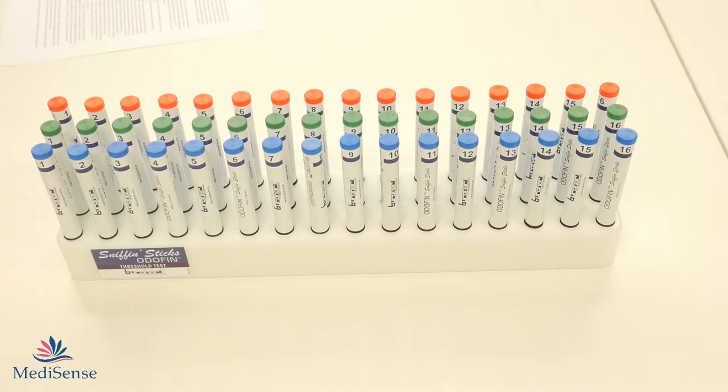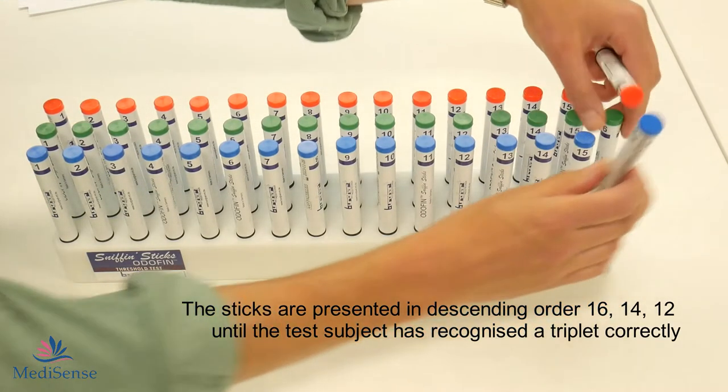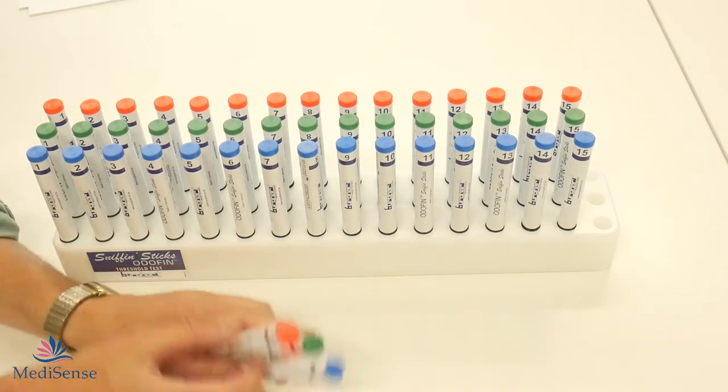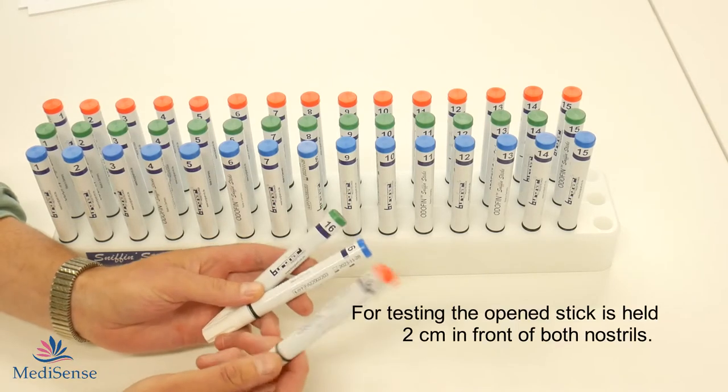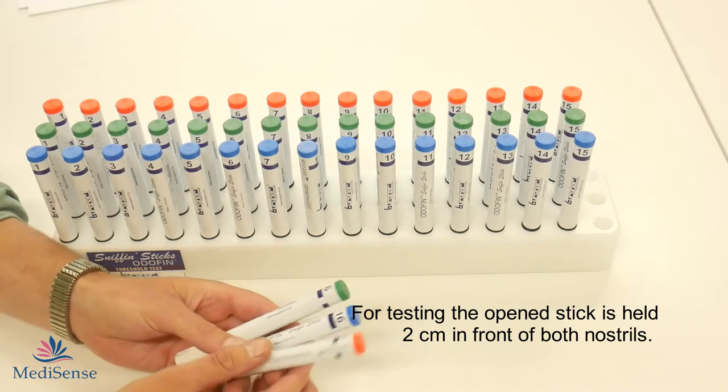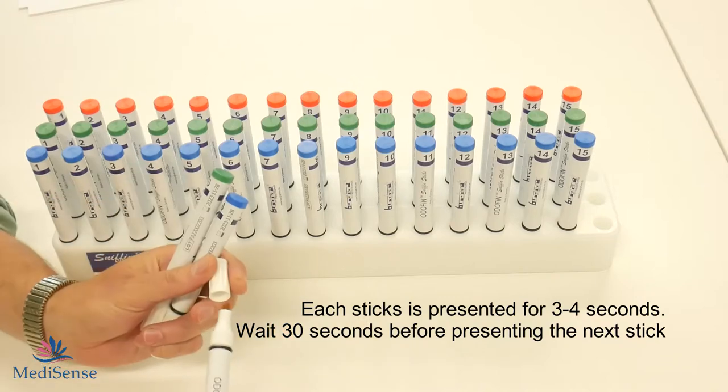Okay, now the test procedure. When you start the test you offer the 16 pens with the lowest concentration. The red one is the target pen which has to be guessed by the test person. You offer each pen, pull off the cap and offer it to the test person.